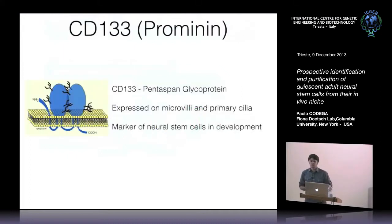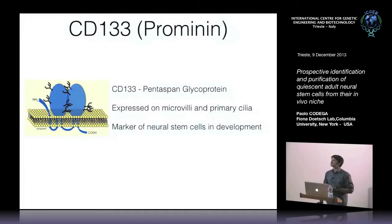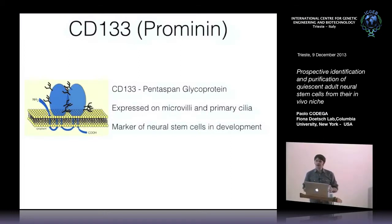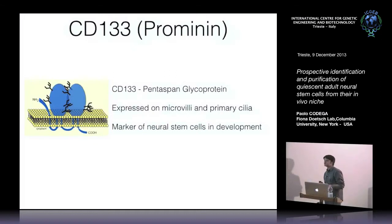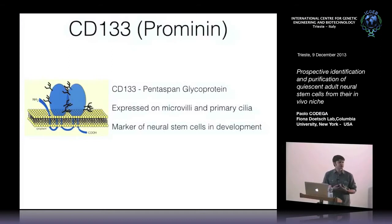To prospectively identify the quiescent subset, we focused our attention on CD133, also known as Prominin, a pentaspan glycoprotein expressed on microvilli and primary cilia. CD133 is also found to be expressed in neural stem cells during development.